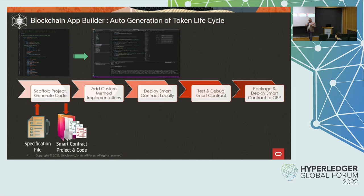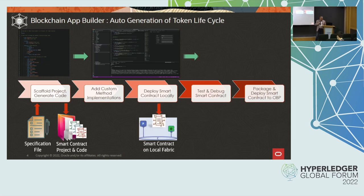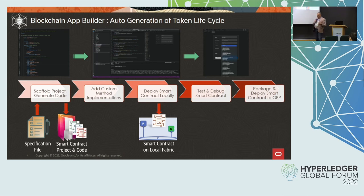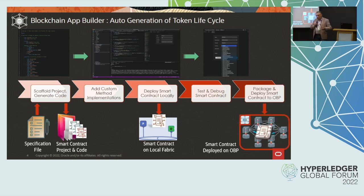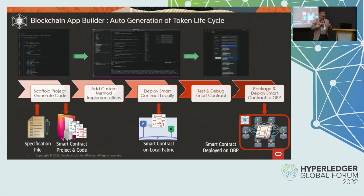Once this is available, you can use it as built with all of the basic CRUD methods — create, update, query, delete — but you can also add your own custom logic on top should you need to. So it can be either a no-code or low-code environment. Then you can deploy it to a local environment with a built-in Hyperledger Fabric infrastructure and test it locally. Once you've done testing and debugging, you can package and deploy it automatically using the tool to our blockchain platform nodes or any other third-party Hyperledger Fabric nodes.